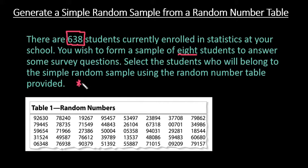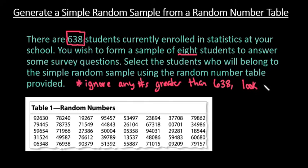So one thing that you have to know on this is that you have to ignore any numbers greater than 638 and you would have to make sure that you're looking at three digits at a time. If you only look at one or two digits it's impossible to get all of the values so you do have to look at three digits at a time when you are doing this.